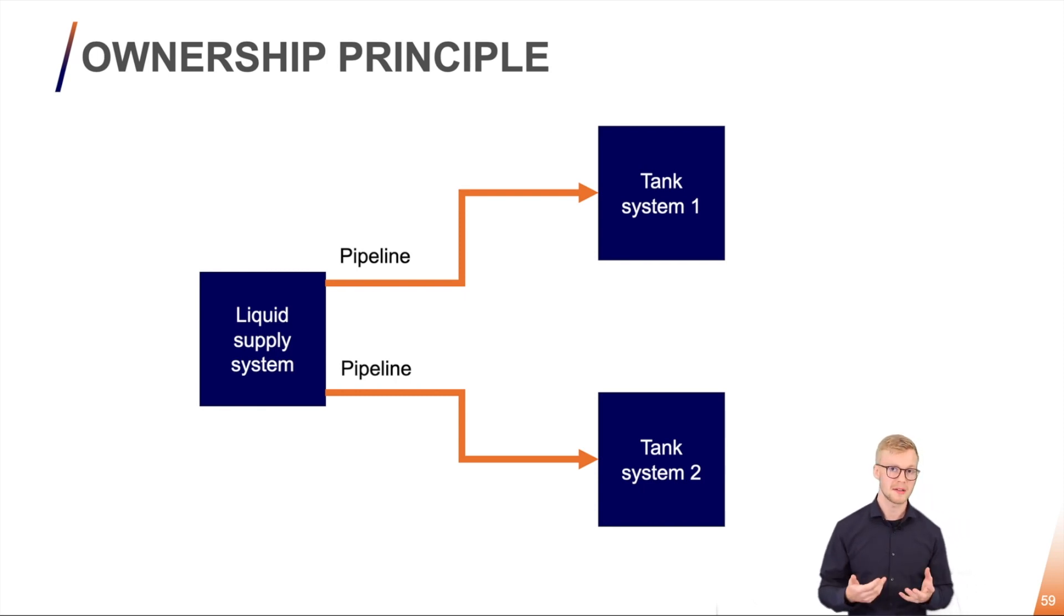If we have a quite simple transfer system, for example just some pipelines, they will probably contain less than five system elements and according to the latest rule it should belong to one of the other systems here. So which one should we pick?